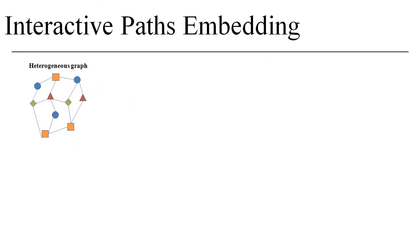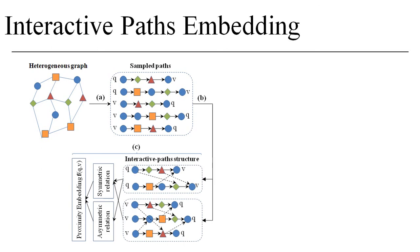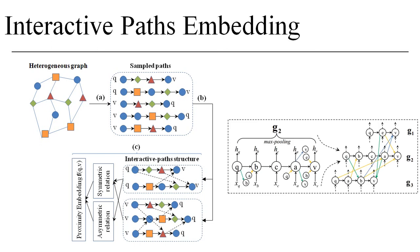Given a heterogeneous graph, firstly we sample multiple paths between Q and V. After that, we leverage a cycle-free shuffling mechanism to construct the interactive path from the sampled paths. We propose an interactive GRU mechanism to effectively embed the interactive path into low-dimensional vectors to represent the semantic relation. That is, we take the interactions into consideration to model each path, and finally we calculate the proximity score by these vectors.